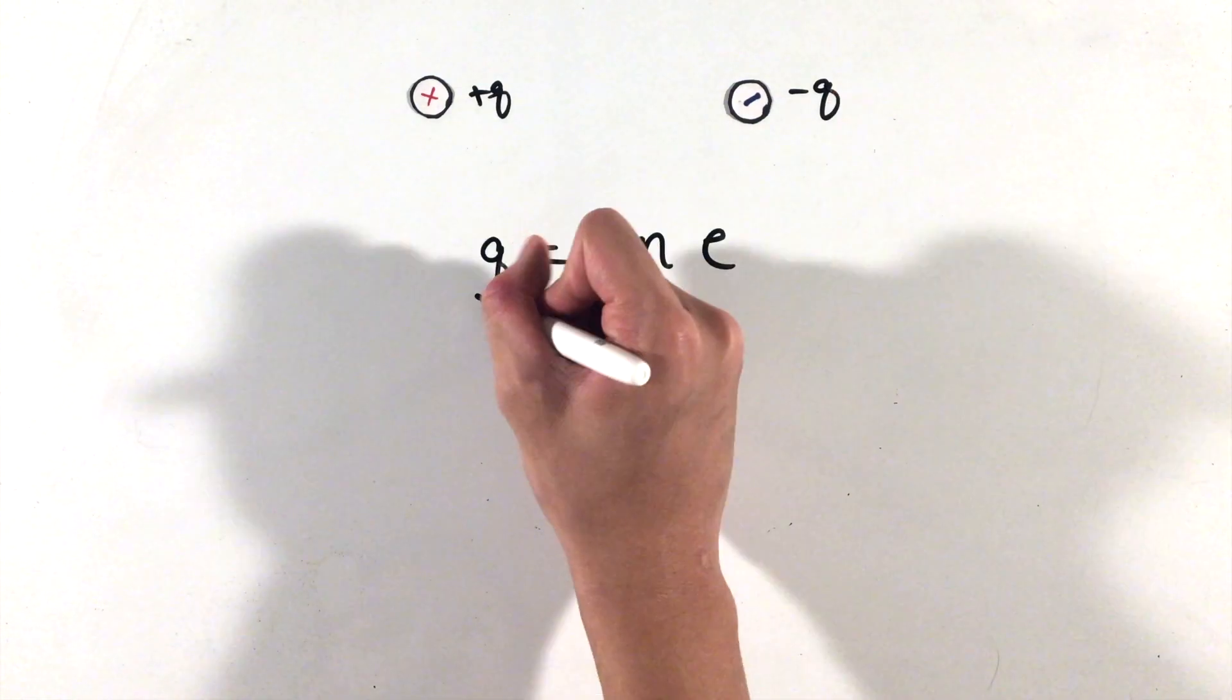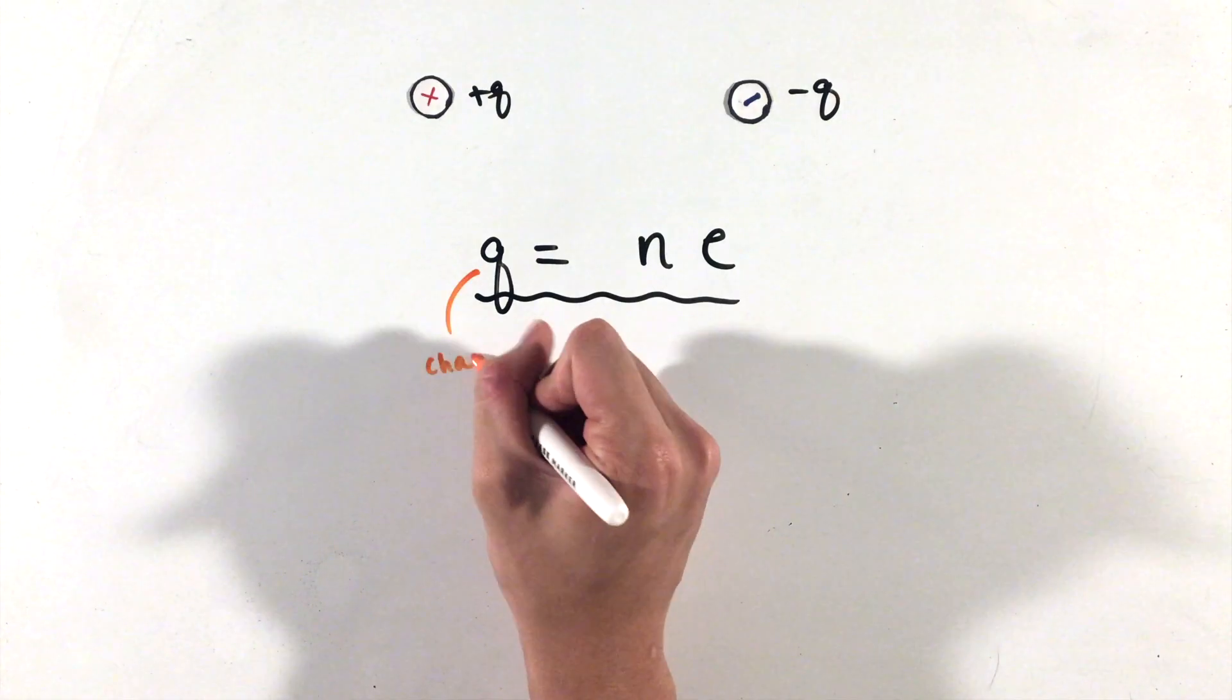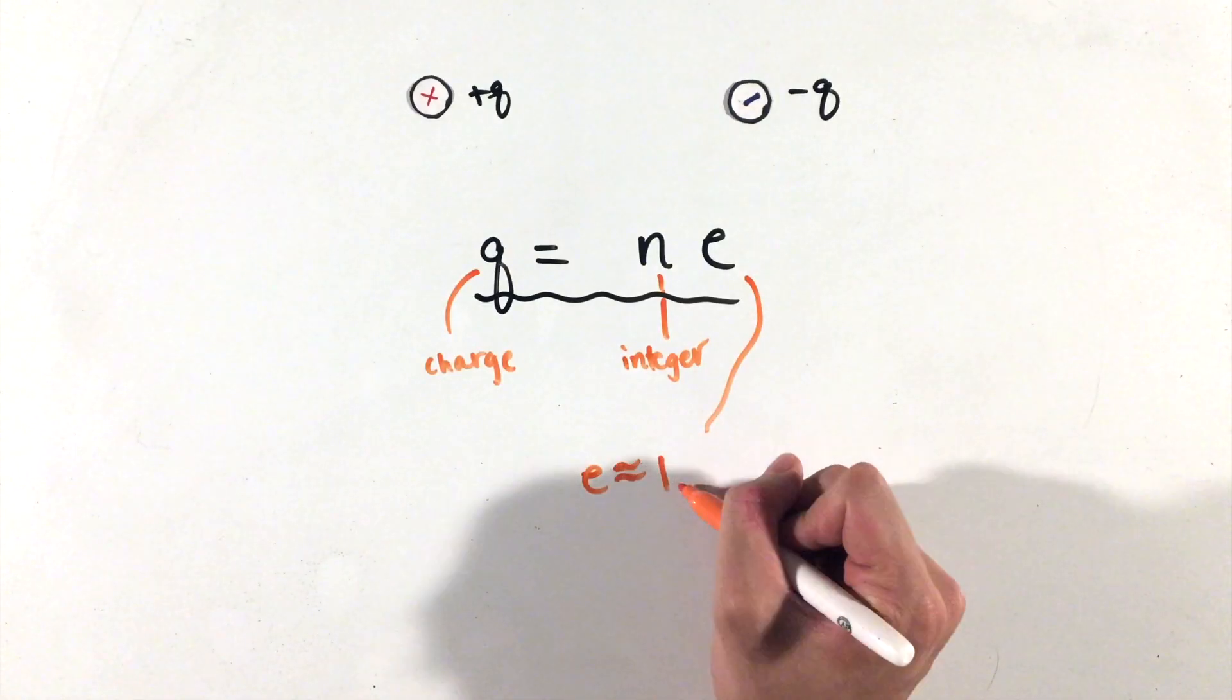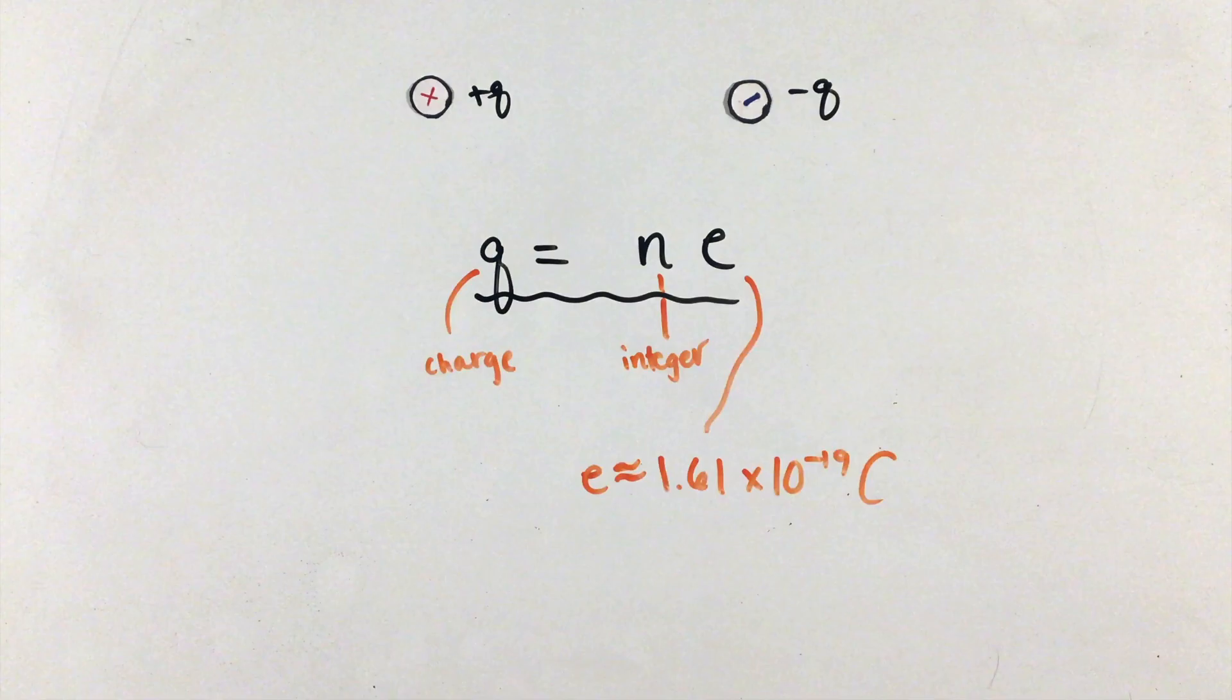Another property of charge is that it's quantized, or always shows up in multiples of one elementary constant. The elementary constant is equal to the charge of one electron or one proton, which has a magnitude of around 1.61 times 10 to the negative 19th coulombs.